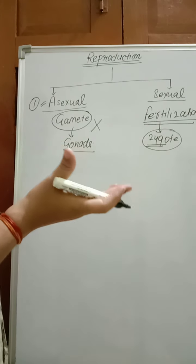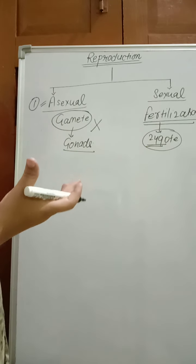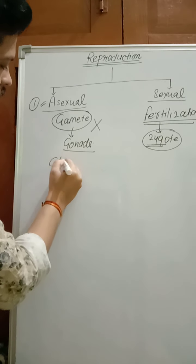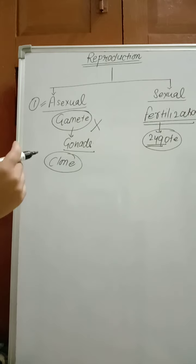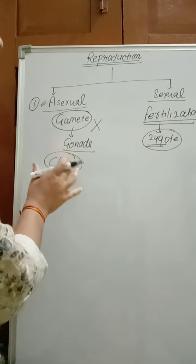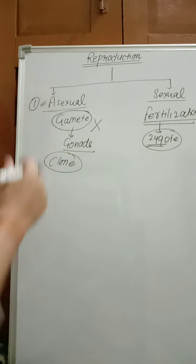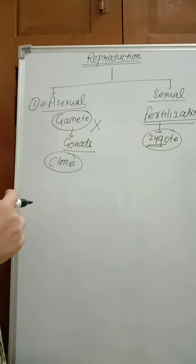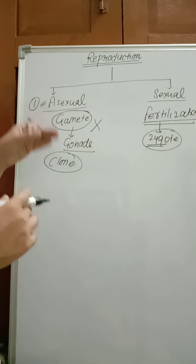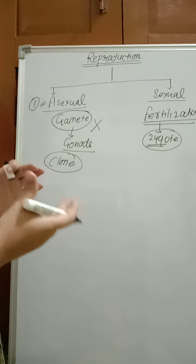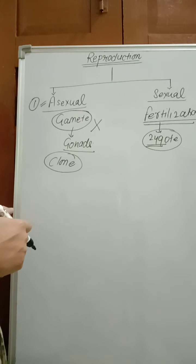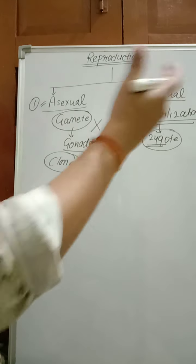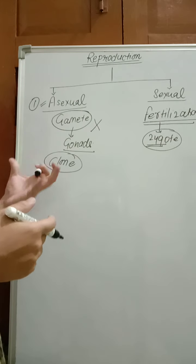Variation means variety and difference among individuals — the same type of individuals are produced. That is called a clone. A clone is genetically and morphologically similar to its parents. In gametes, there are 23 chromosomes — 23 in sperm and 23 in ovum. Due to fusion, a zygote is formed which is less identical to the parents. That shows variation, which transfers to the next generation and leads to formation of new species.